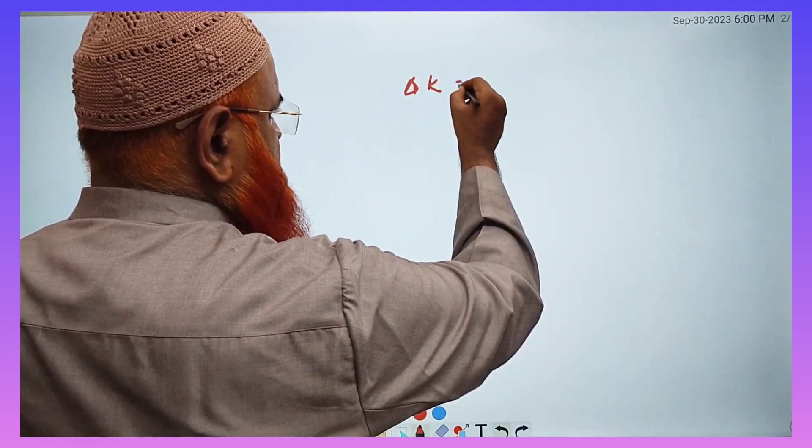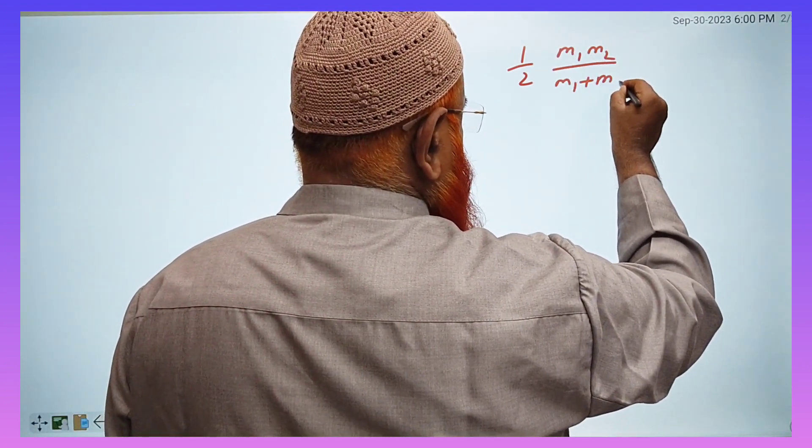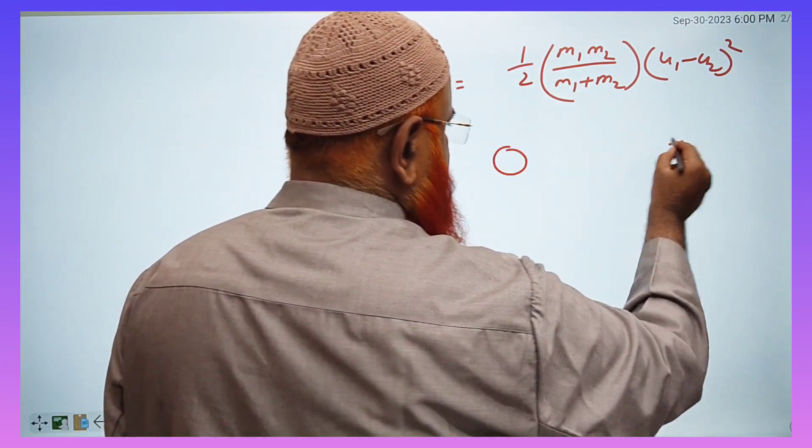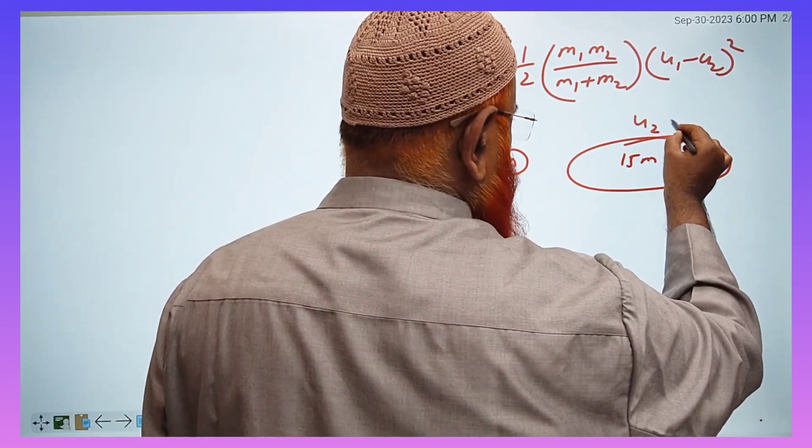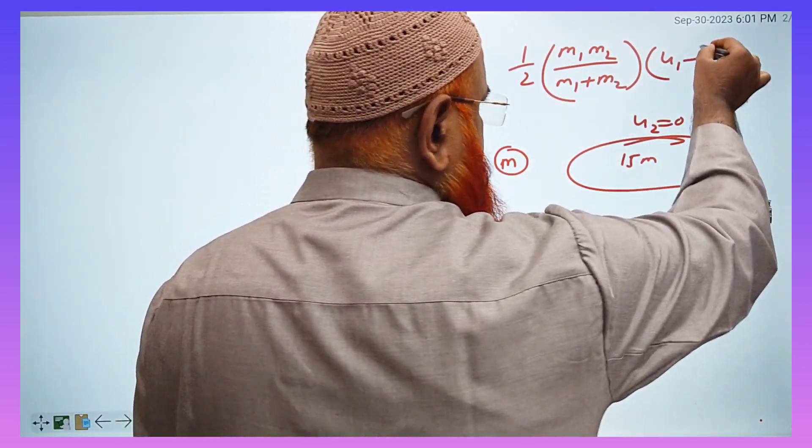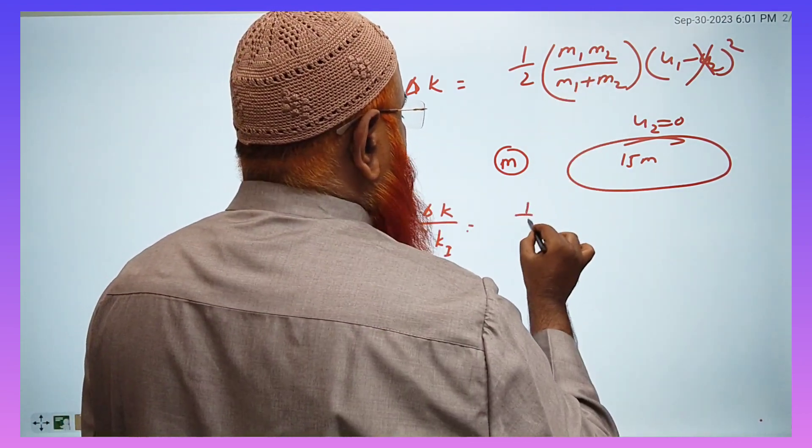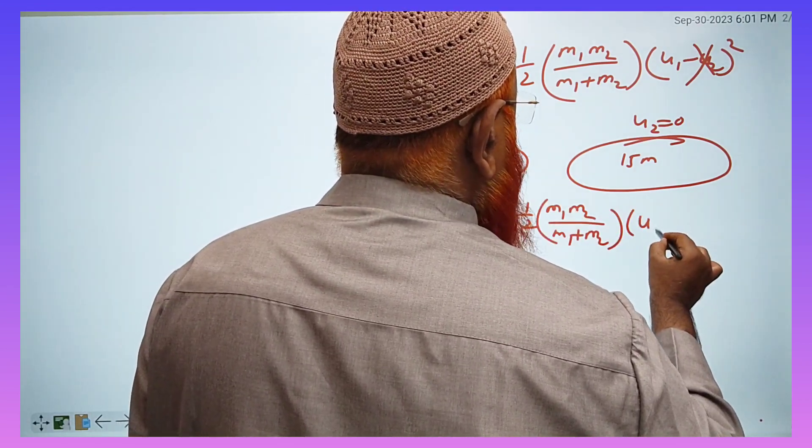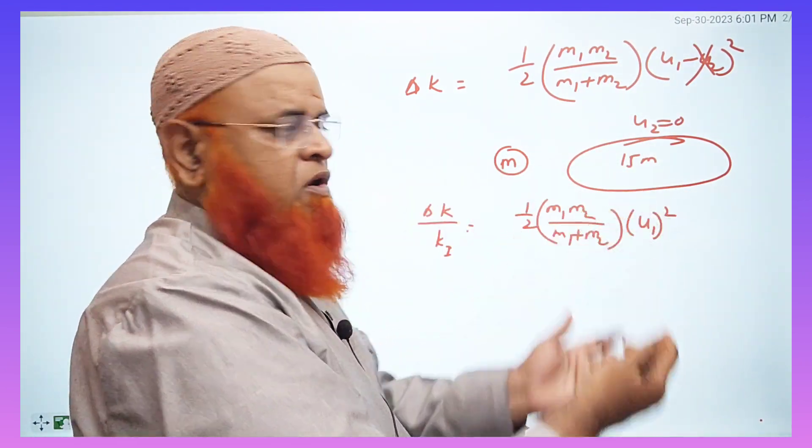So for that, you all know there is a formula for percentage loss of kinetic energy. What is that formula? That is ½(m₁m₂)/(m₁ + m₂) into (u₁ - u₂)² . Here, a single block is colliding with a blocks combination of 15m. This is the second blocks combination that is m, 2m, and all these blocks combined together, forming 15. And all the blocks are at rest, so u₂ is going to be 0. So therefore, I can write now ΔK by K initial is going to be ½(m₁m₂)/(m₁ + m₂) into u₁² because u₂ is 0.